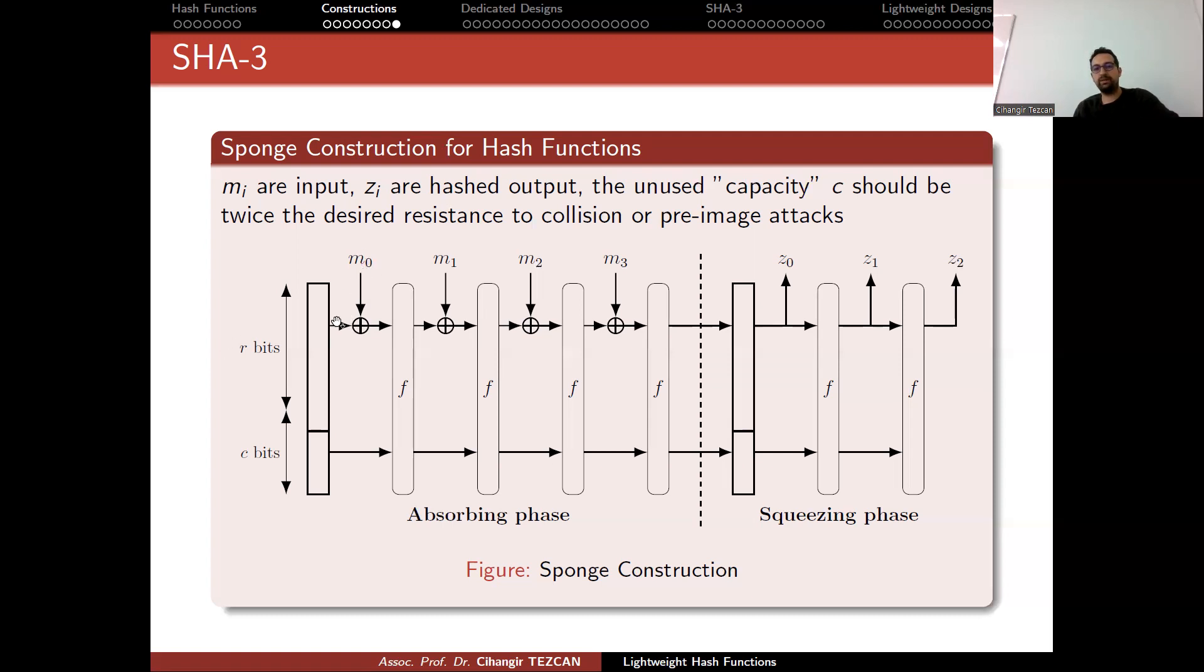So you start feeding your message from here. You XOR it, but only r bits are fed. So the bottom c bits are not modified. This is why we call it capacity. Then you perform a F function. This is generally a permutation. And in some designs, this is just S-box operations, permutations and so on. So this way you modify your internal states.